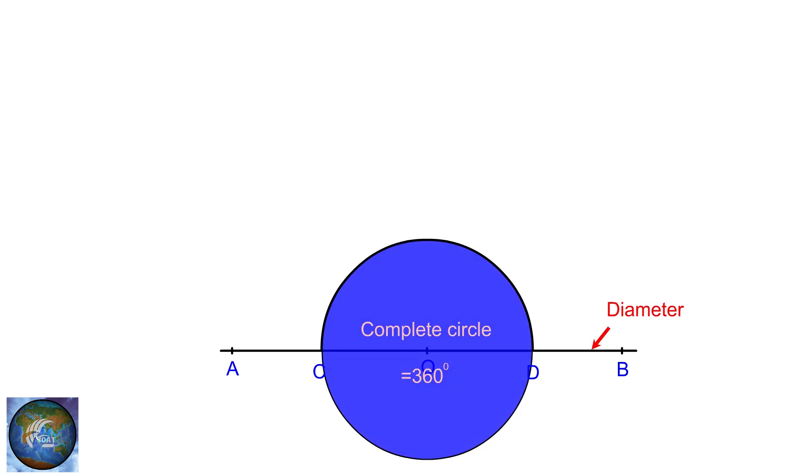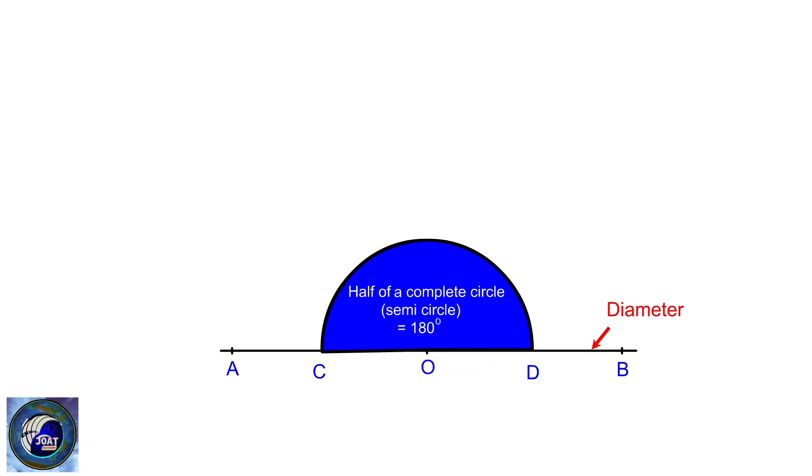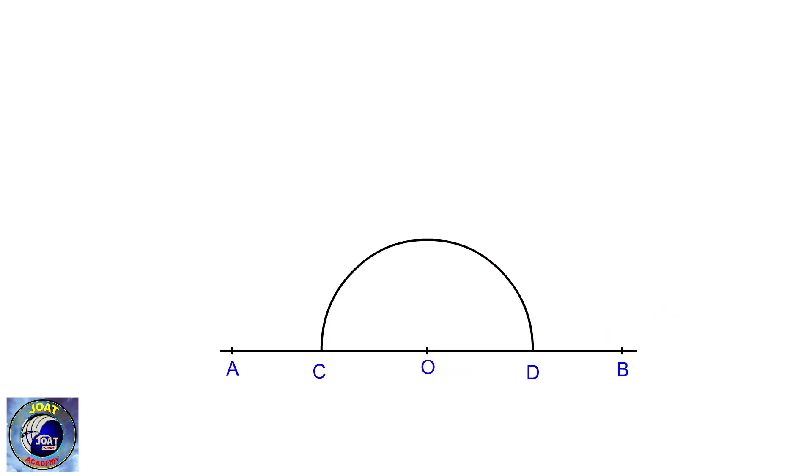Note, a semicircle measures 180 degrees, as a full circle is 360 degrees, and half of it is 180 degrees.